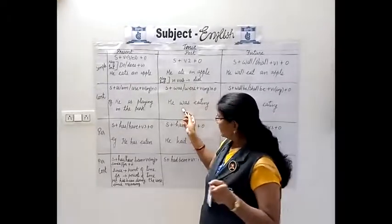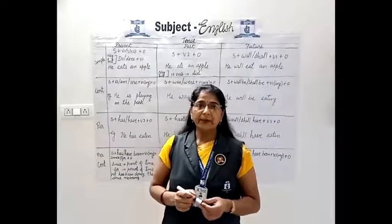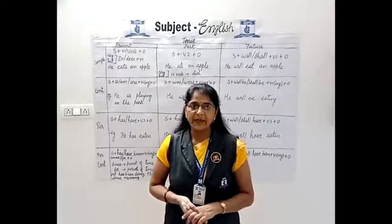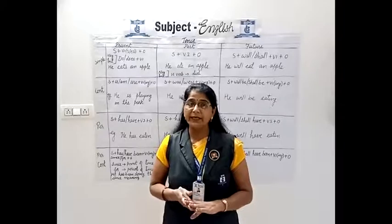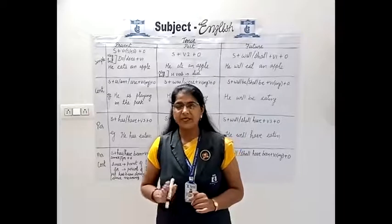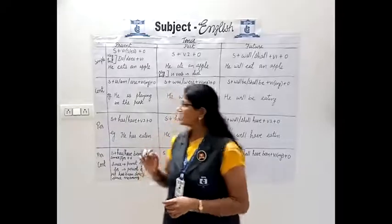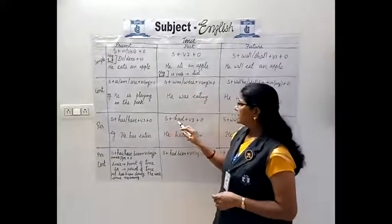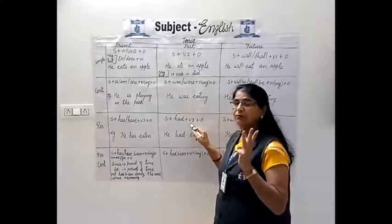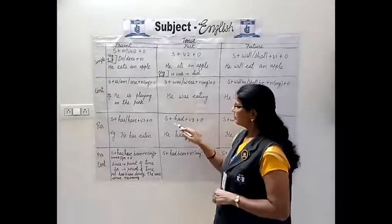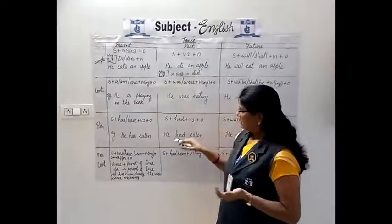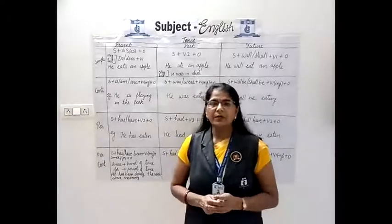Now have a look at past perfect tense — an action that completed before a certain moment in the past. Example: 'I had sent the parcel last Sunday.' Structure: subject plus had plus V3 plus object. V3 is the third form of the verb. Example: 'He had eaten a mango.' Hope you have understood past perfect tense.